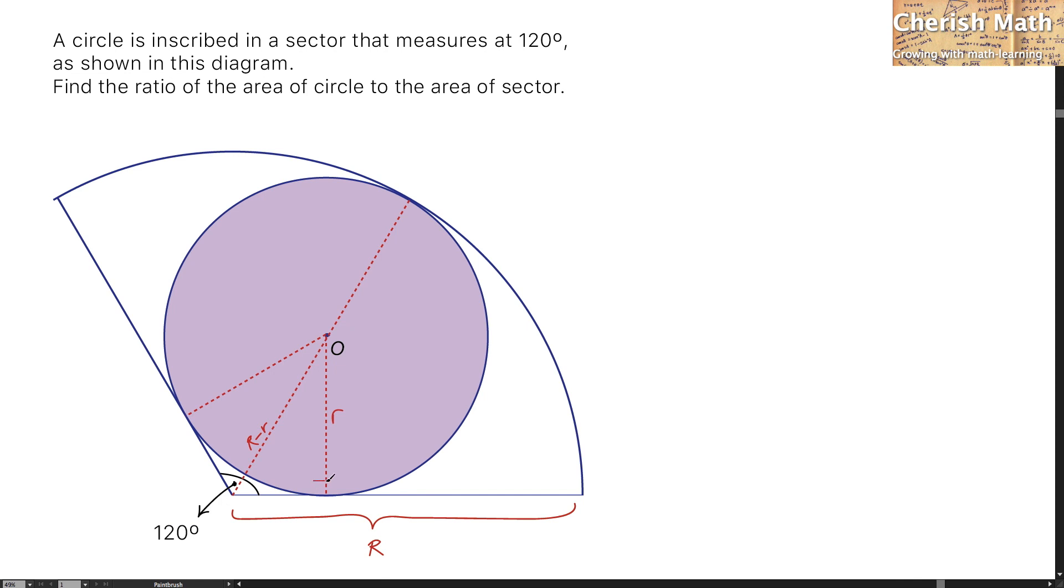And this is tangent, and this angle is going to be half of the 120 degrees, which is 60 degrees. By referring to the triangle located on the right side here, I'm going to work out sine 60 degrees is equal to lowercase r divided by uppercase R minus lowercase r.